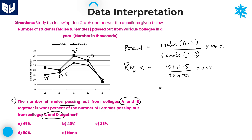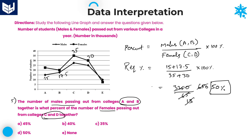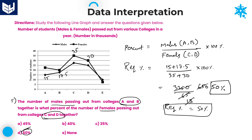Calculating: 3250/65. Dividing by 5 gives 650/13 = 50. Therefore the required percentage is 50%, meaning males from colleges A and B together are 50% of females from colleges C and D together. Option D is the right answer for this question.